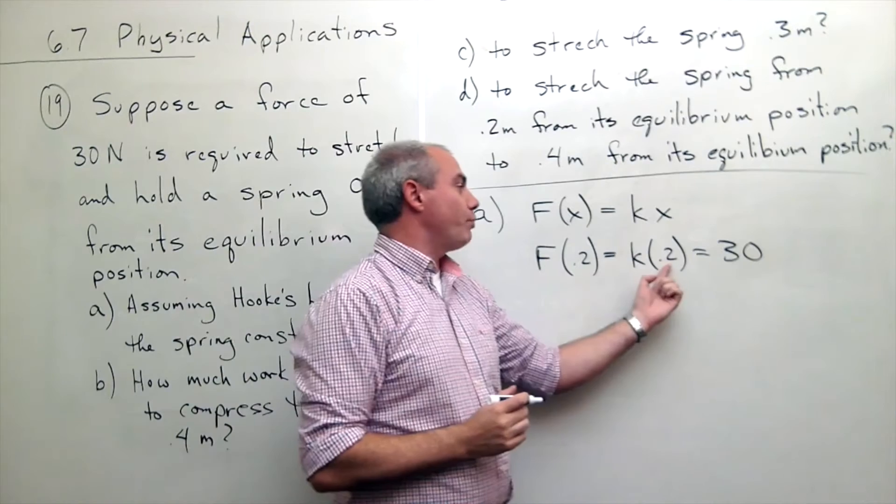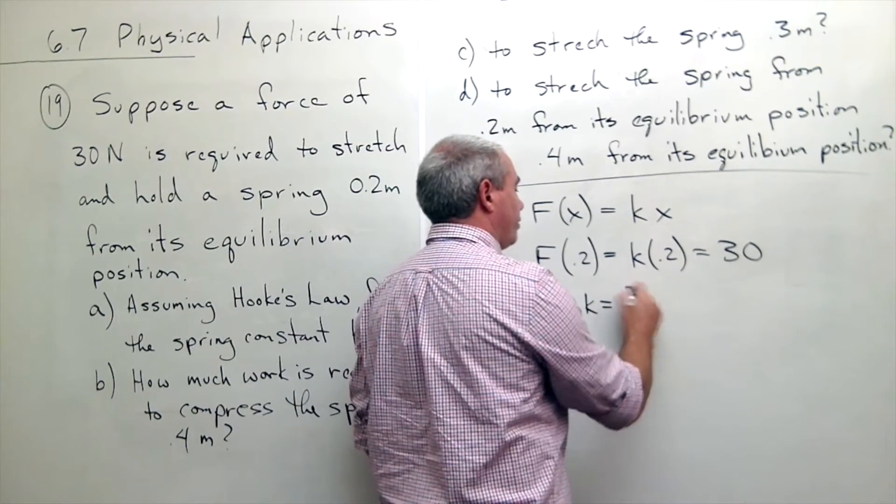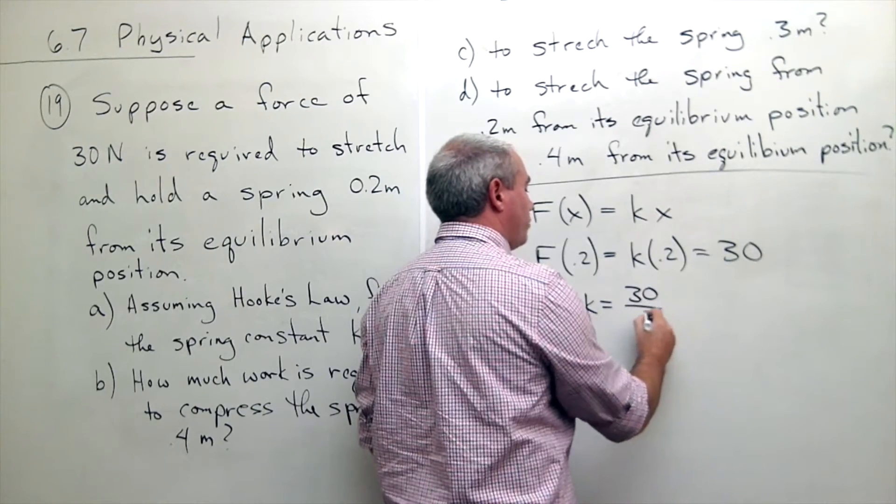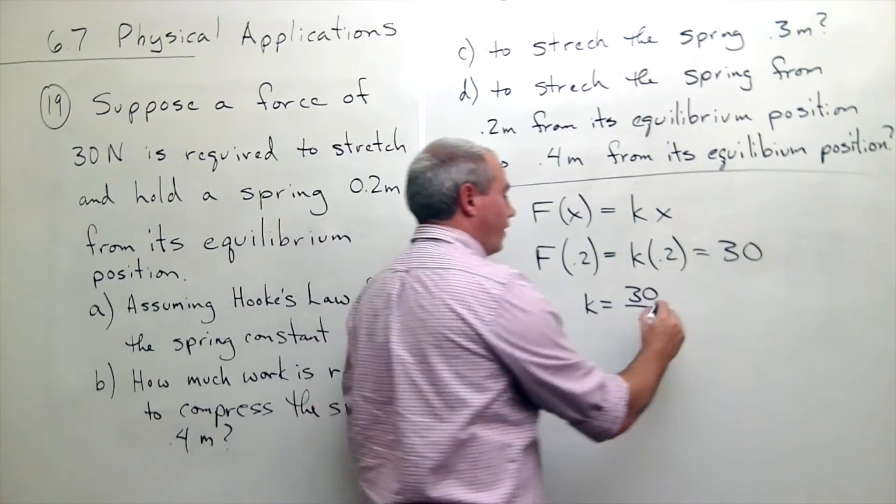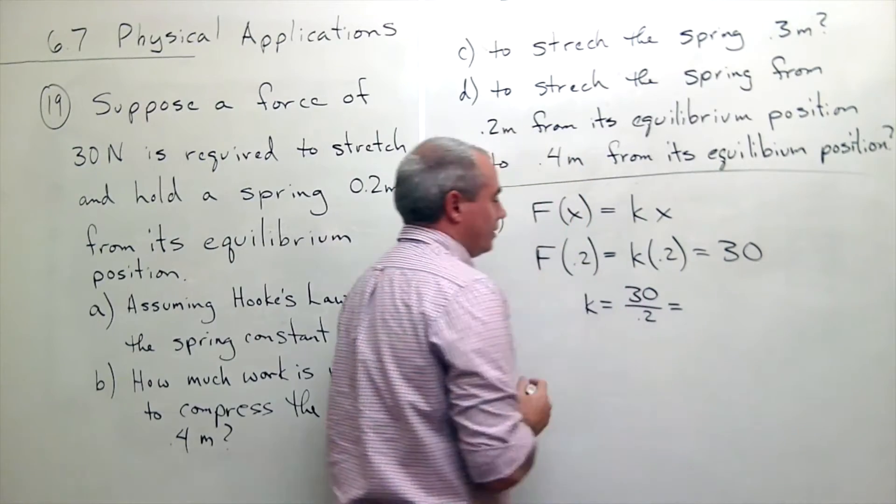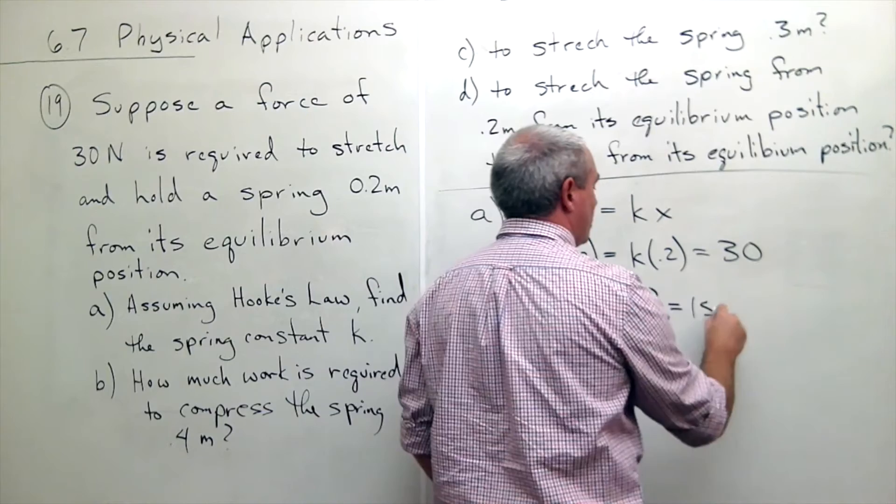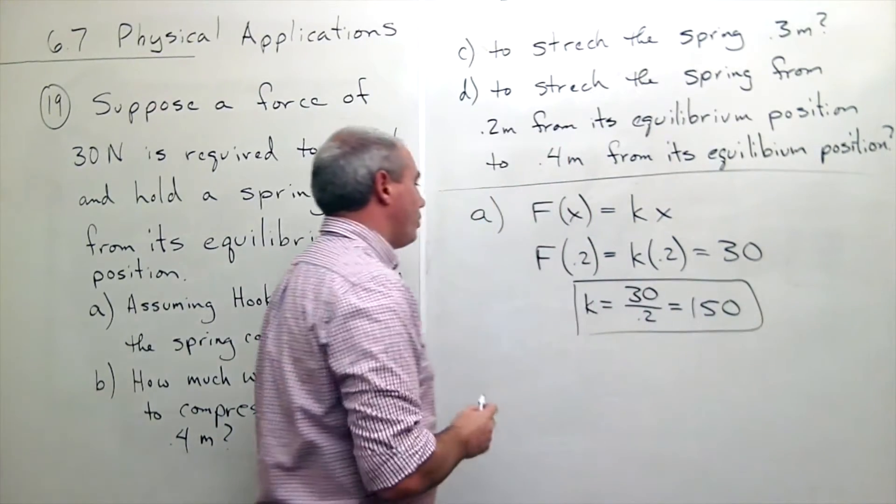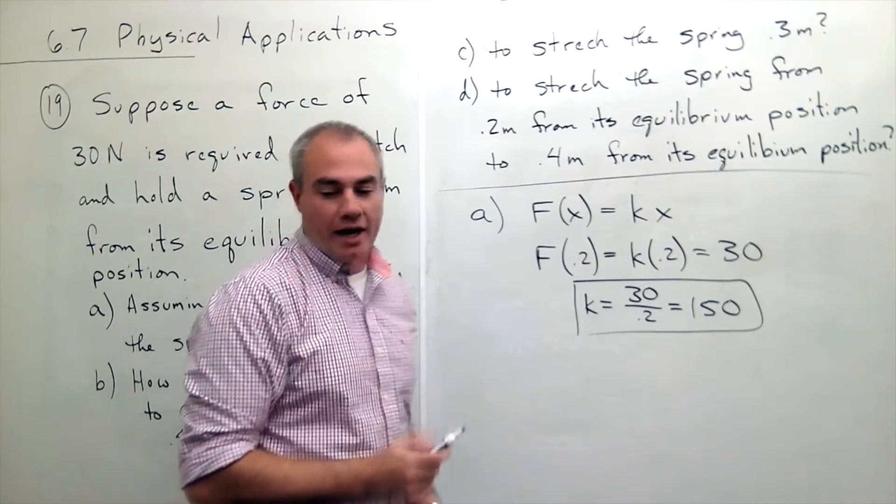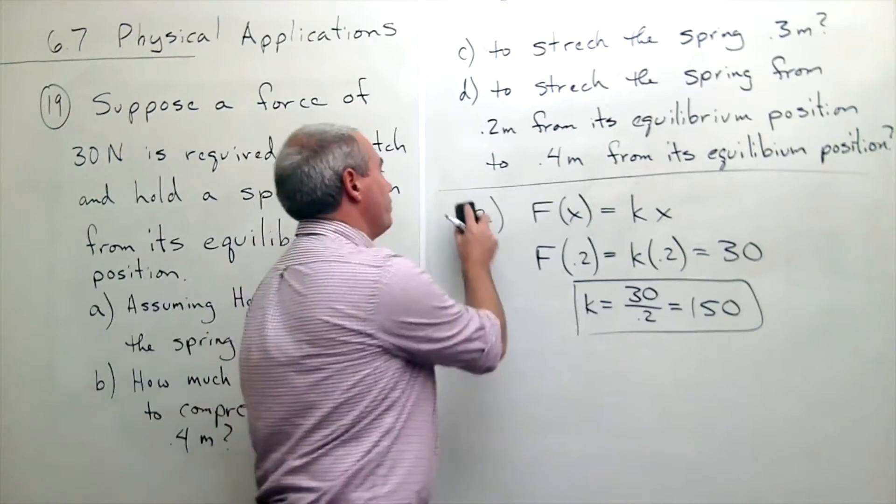So K times 0.2 is equal to 30. So K is equal to 30 divided by 0.2, and 0.2 is 1 fifth, so this is 150 would be our K. So we've got part A done. I think I'll just erase that now and we'll move on to part B.